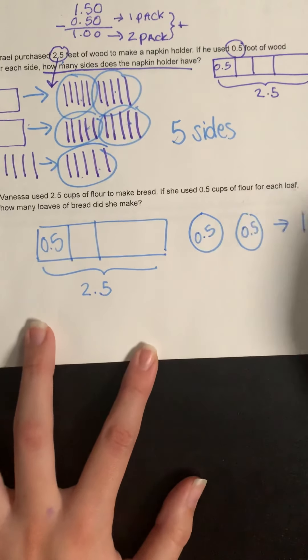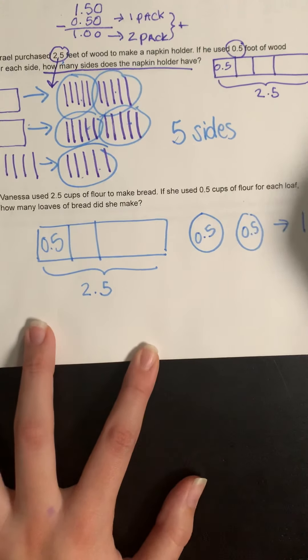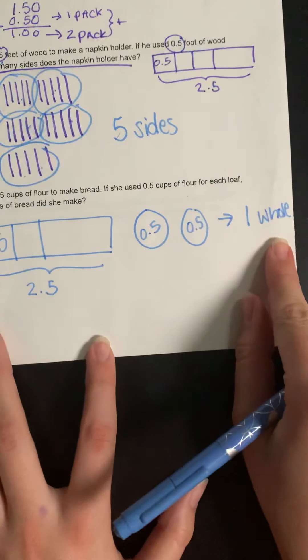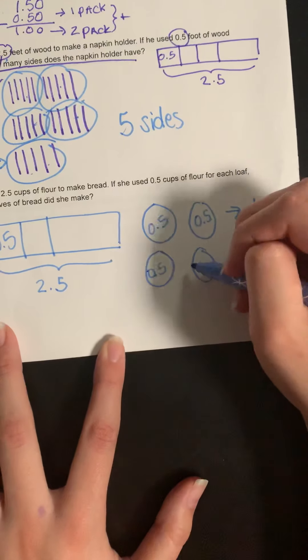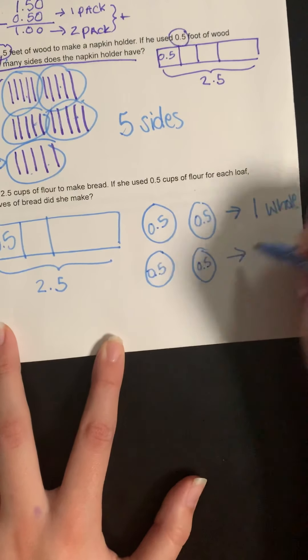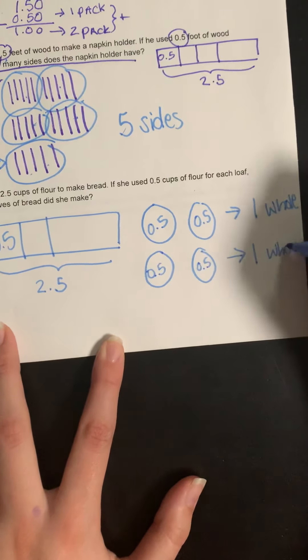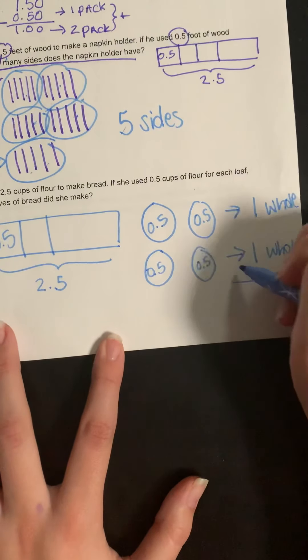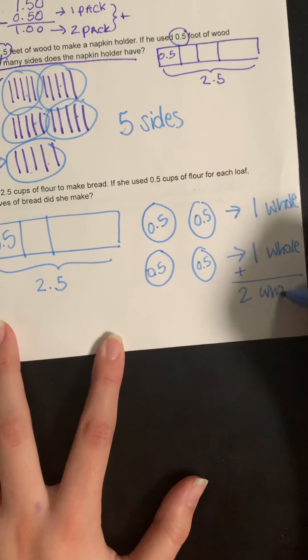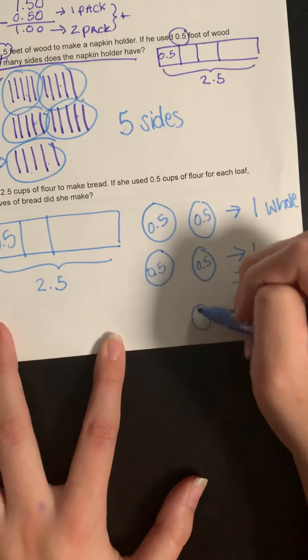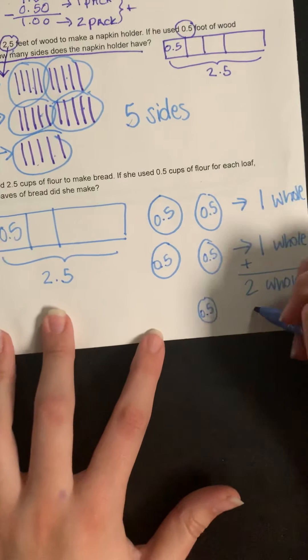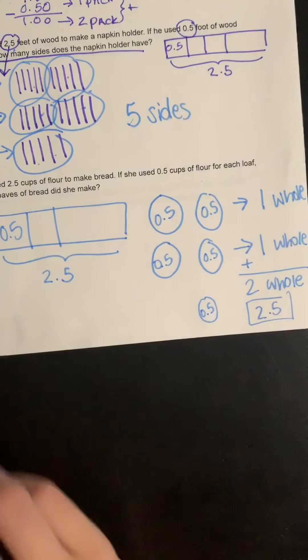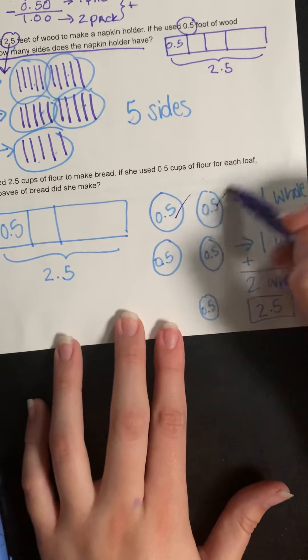I can do another drawing of that to make another whole - that gives me two wholes. And then I just need 0.5 more to make 2.5. So I have 1, 2, 3, 4, and 5 loaves of bread.